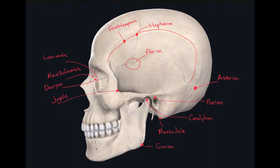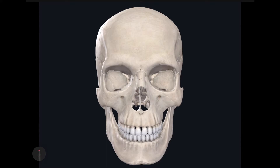Now remember, all these craniometric points are found on the contralateral side of the skull as well, so all of these are paired. Unlike the other craniometric points which were found on the midsagittal plane, these have a paired craniometric point on the opposite side. On the anterior surface of the skull, there are a few more craniometric points we need to cover.